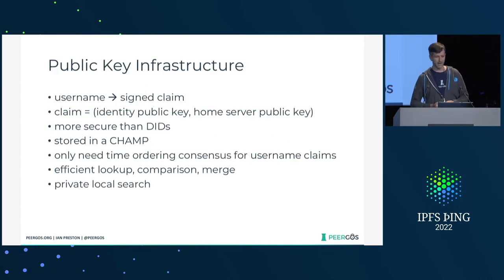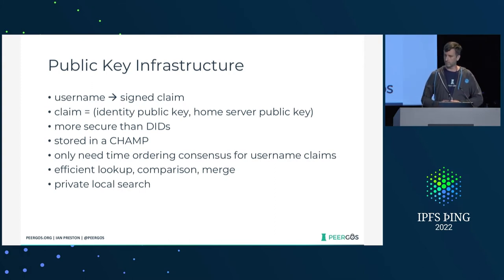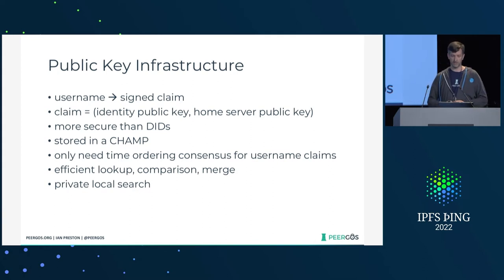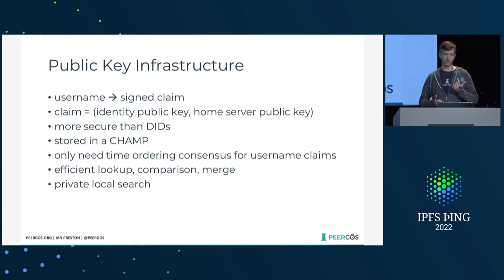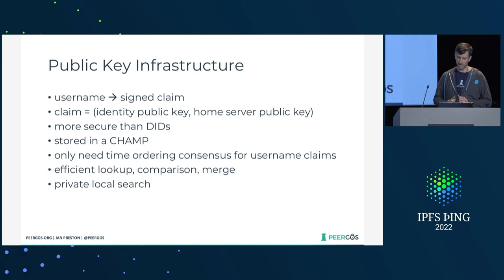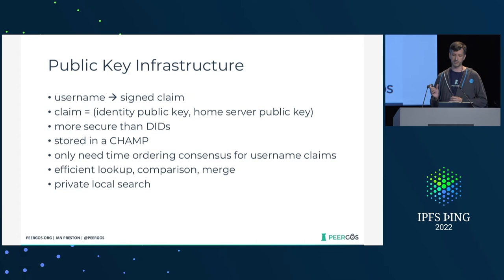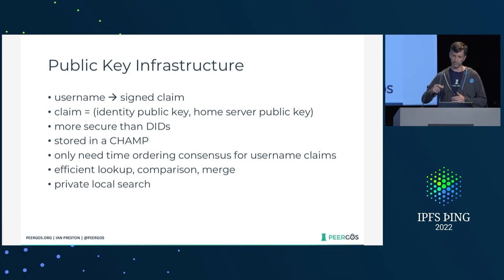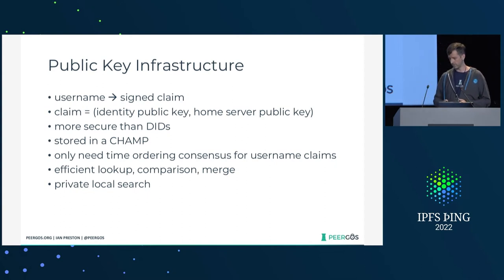The usernames are unique — how do we do that? You need a PKI. This is basically just a mapping from username to a list of signed claims, and each claim is essentially two public keys: your identity public key and your home server public key, which is an IPFS node ID. This is slightly more secure than DIDs in the general case, because with DIDs you can have DNS leaking into it via the service endpoints, which are URLs. We avoid that via the home server node ID.